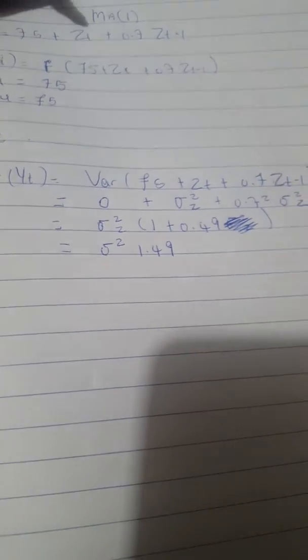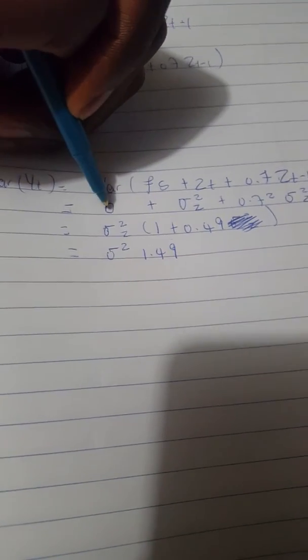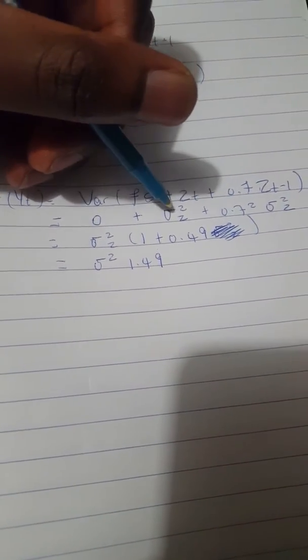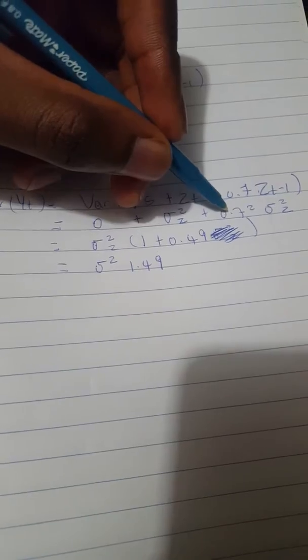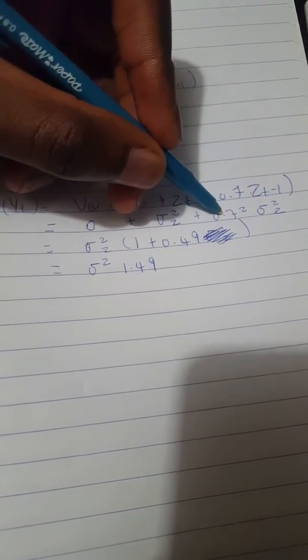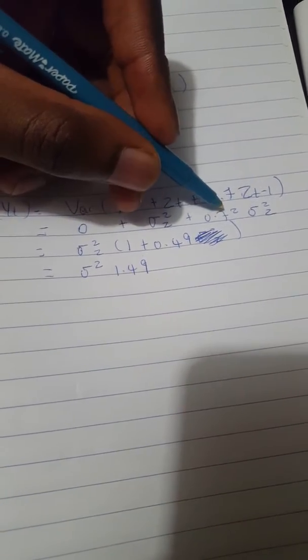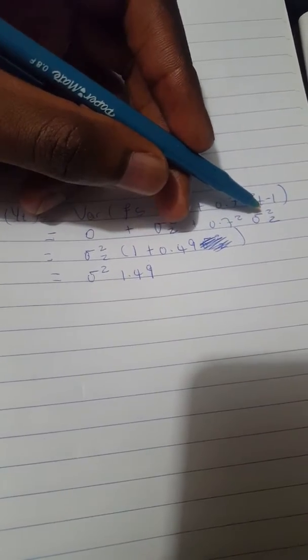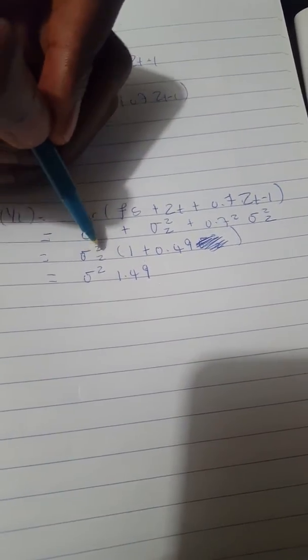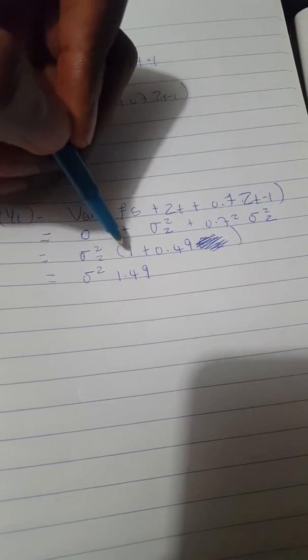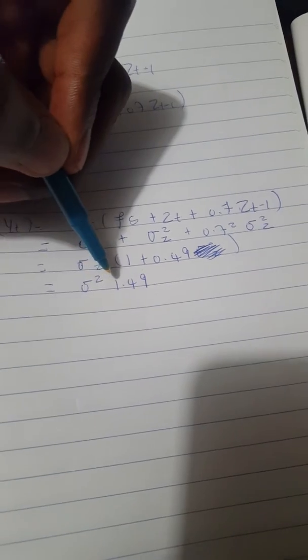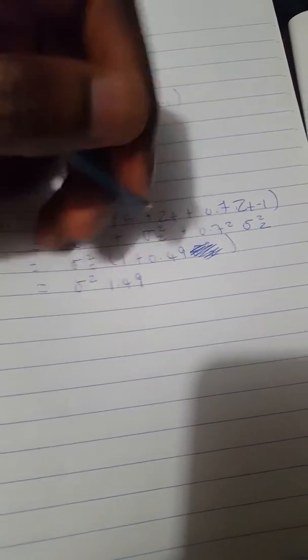And so, remember, that would be 0. We get the var of Zt sigma squared Zt. And now, we'll square this coefficient at the front 0.74 squared sigma squared Zt. That would factor out sigma squared 1 plus 0.49 sigma squared 1.49 sigma squared Zt.